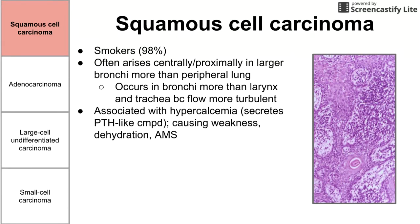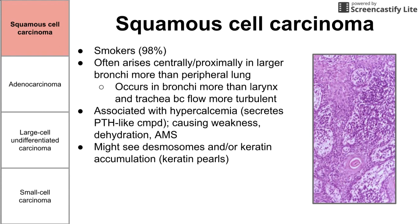One big association with squamous cell is hypercalcemia. This tumor usually secretes a parathyroid hormone-like compound, which increases the levels of calcium in the blood. This can cause a variety of symptoms including weakness, dehydration, and altered mental status. Histologically, we might see desmosomes or keratin accumulation under the microscope. This keratin accumulation usually comes in the form of keratin pearls, as you can see in the image on the right — an accumulation of keratin that is pretty characteristic of squamous cell carcinoma.